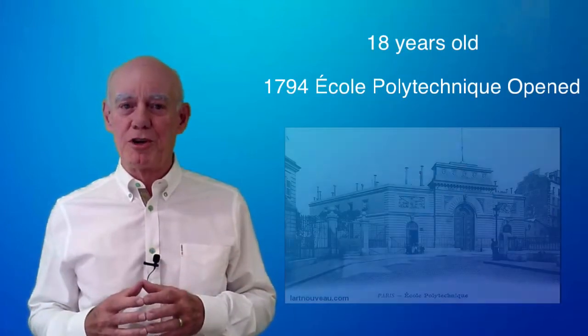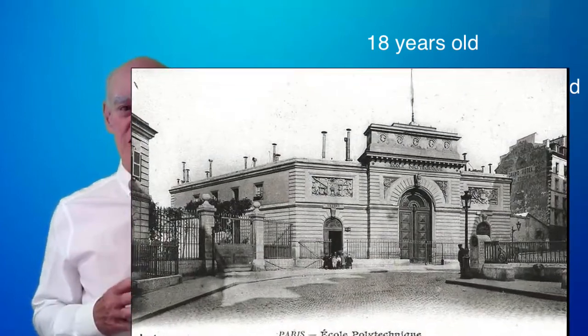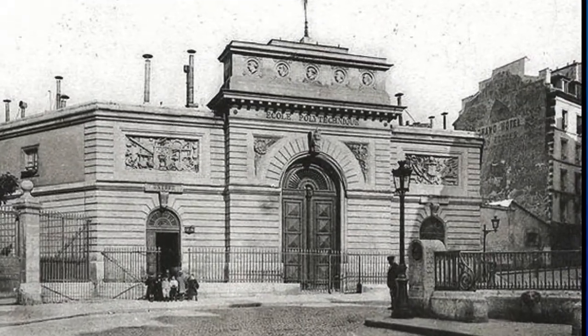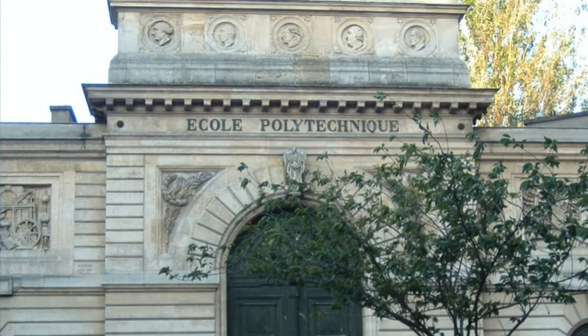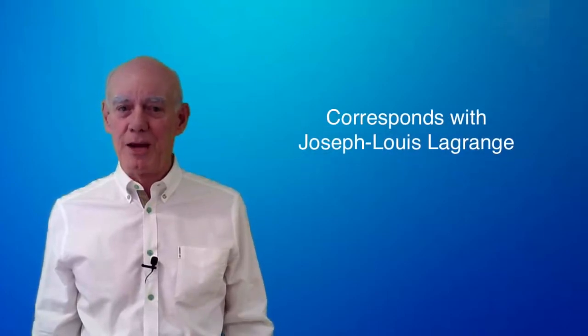Women were not allowed to attend, but Sophie was able to get some lecture notes from some of the courses, and in particular, one of the mathematics courses taught by a mathematician named Lagrange.